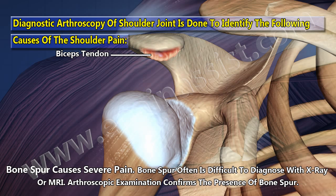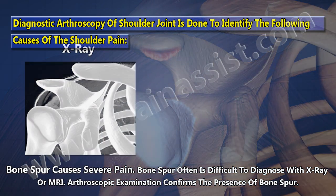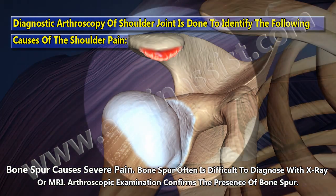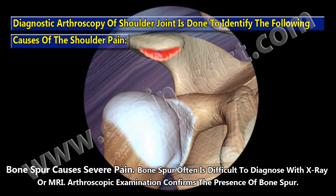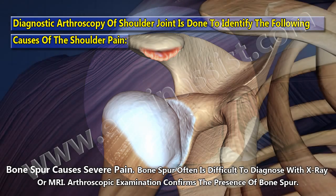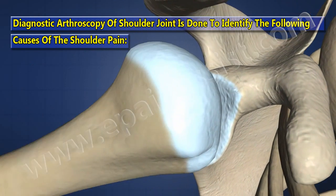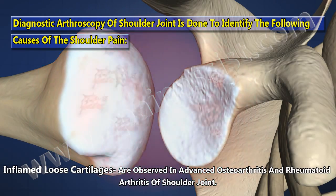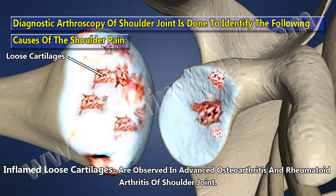Bone spurs cause severe pain and are often difficult to diagnose with x-ray or MRI. Arthroscopic examination confirms the presence of bone spurs. Bone spurs and inflamed loose cartilages are also observed in advanced osteoarthritis and rheumatoid arthritis of the shoulder joint.